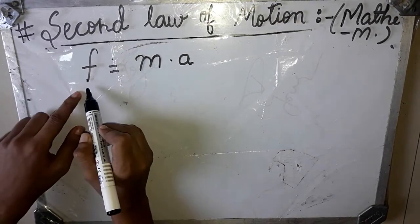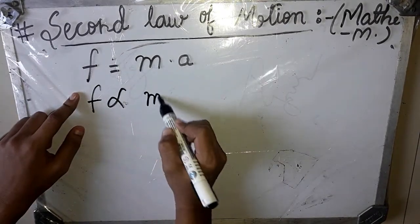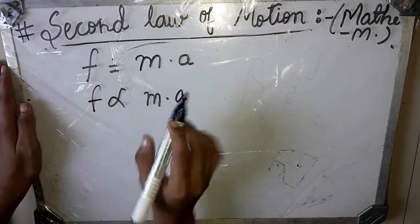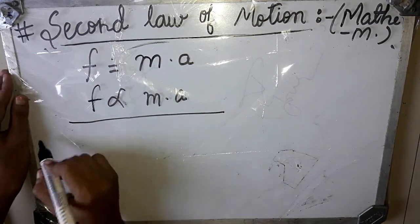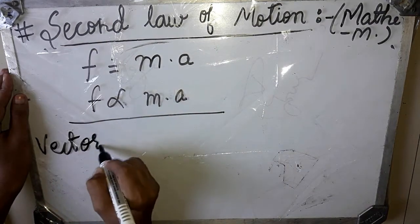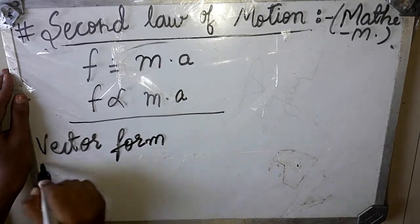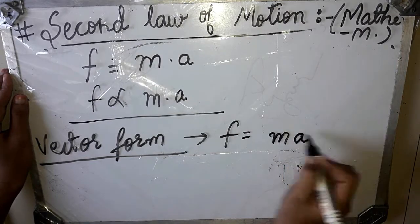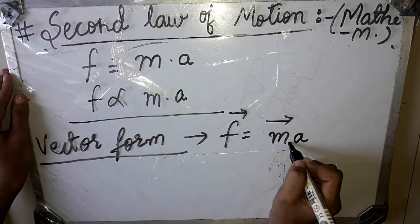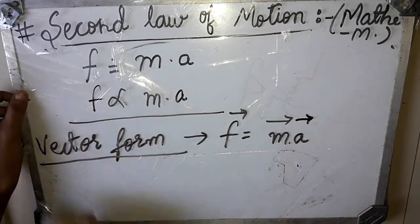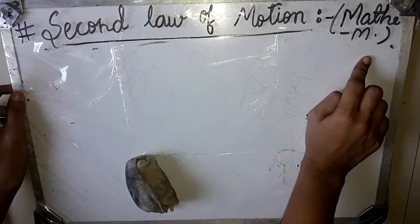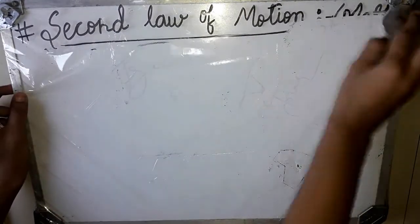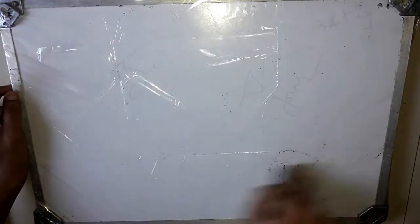Force acting on a body is directly proportional to the mass of the body and its acceleration. Now, let us write the second law of motion in vector form. This is not usually asked in exams but we should know it — it may appear in MCQs. In vector form: F-vector equals m times a-vector. Vectors are placed on both F and a. This is the complete derivation and mathematical formulation of the second law of motion, which is important from an examination point of view.